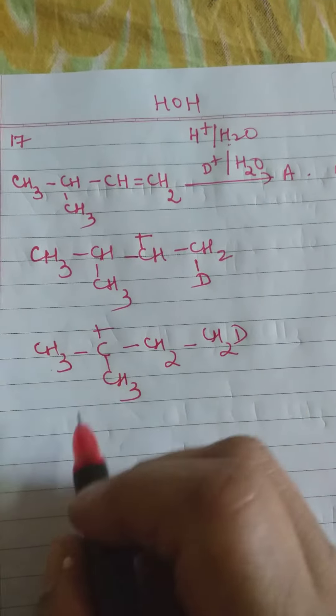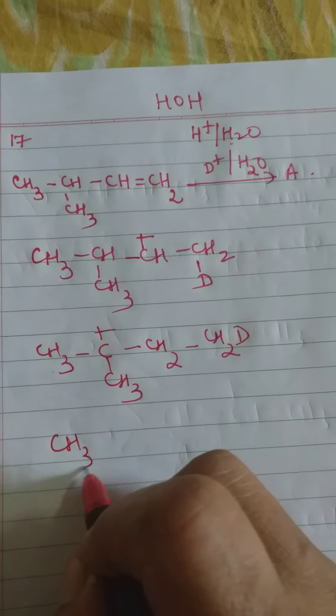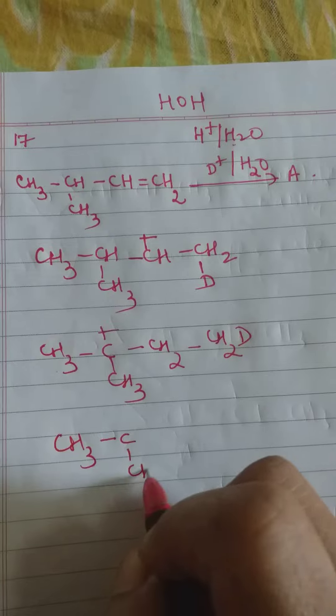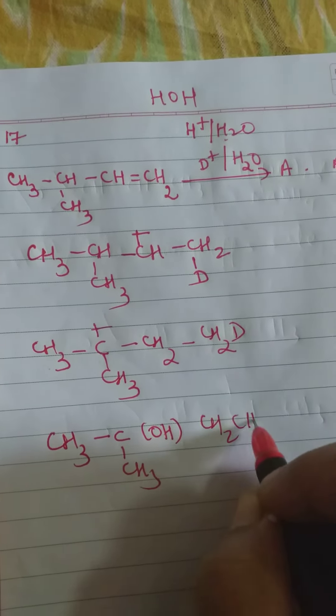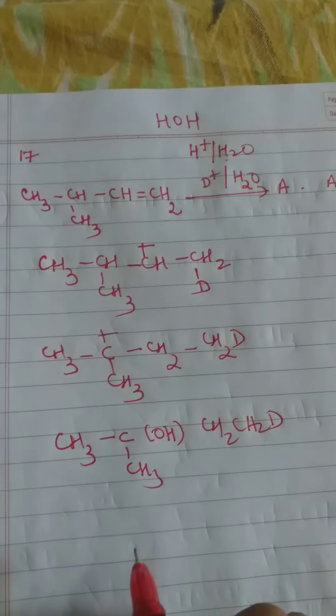So, therefore the OH will now add here. So, this is going to be your product: CH3-C-CH3-OH-CH2-CH2-D. Okay.